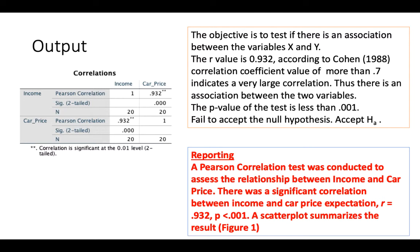If it's too large, you would often wonder whether it is actually the same variable. Thus, there is an association between the two variables. The p-value of the test is less than 0.001. Therefore, we fail to accept the null hypothesis. This is how you report it: 'A Pearson correlation test was conducted to assess the relationship between income and car price. There was a significant correlation between income and car price with an R value of 0.932 at p-value less than 0.001.' A scatter plot summarizes the results.